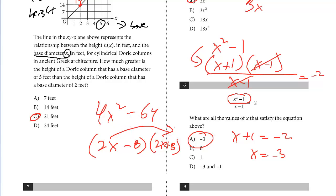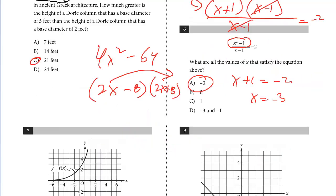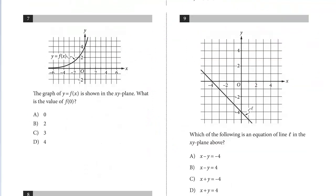One last question. We're going to do just number 7, because that's the last one on this page. The graph of y equals f of x shown in the xy-plane. What's the value of f of 0? So y equals f of x. Here, f of 0.